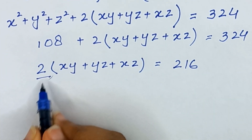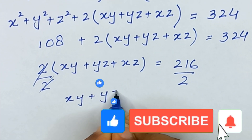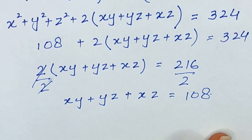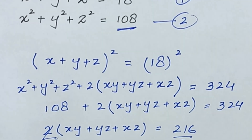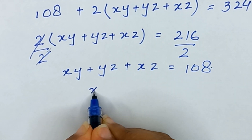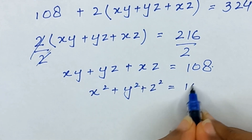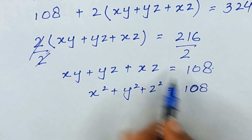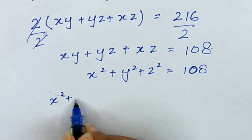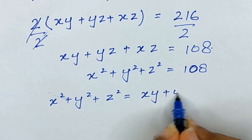Dividing both sides by 2, we get xy plus yz plus xz equals 108. Now notice that equation two gives x² plus y² plus z² equals 108 as well. Since both right-hand sides are equal, we can write: x² plus y² plus z² equals xy plus yz plus xz.